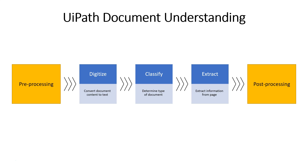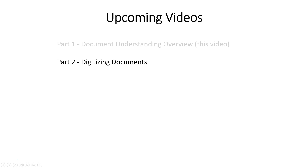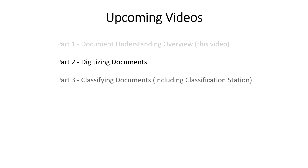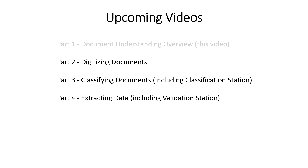So this is a very simplified view of what document understanding is, but we'll go through all of the stages in the videos that are coming up. Part one — document understanding overview — is what you're watching right now, and we're almost done. Part two, which is coming out in a few days, is digitizing documents, where we look at how we extract the text data from the documents. Part three will be classifying documents, where we'll look at a couple of different classifiers and also try the Classification Station. In part four, we'll extract data also using the Validation Station. And that should give you a very good impression and starting point for working with your own document understanding projects.